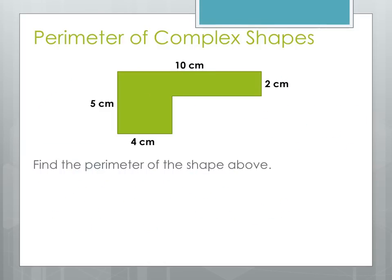Here we're going to find the perimeter of a complex shape. We don't have a nice formula for this shape, but we know we can find the perimeter of any polygon by just adding the sides together. We're given most of the sides, but there are some that are missing, so the first side we're going to have to figure out is this one right here.